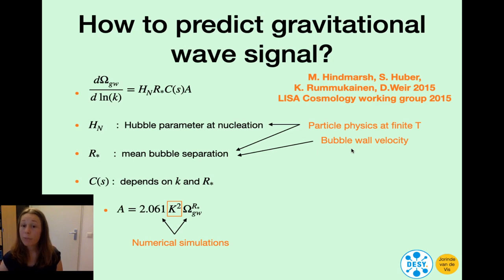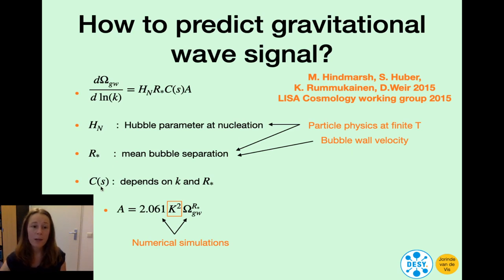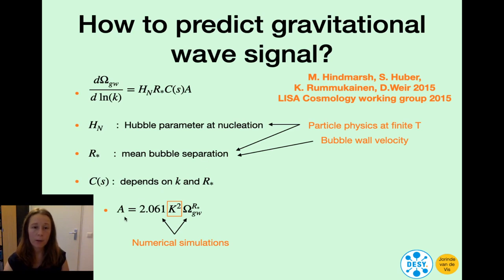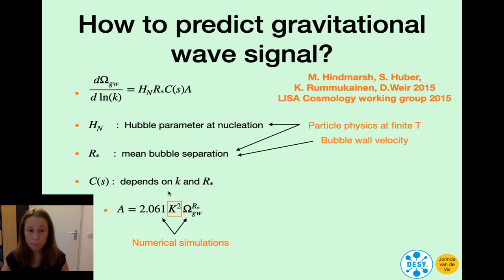It's actually quite involved to determine the bubble wall velocity, and it also depends on the model. Then we have the function c, which determines the shape of the spectrum and depends on k, the momentum, and again on the mean bubble separation. And then we have quantity A, which contains the input from the lattice in two numbers, but also k and k squared. Here k is the kinetic energy fraction, and this is what we are after in this talk.